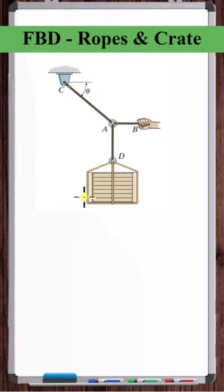Okay, let's draw the free body diagram we need to solve for the forces in this system. This ring here is only subjected to forces coming from these three ropes. That means it's in particle equilibrium.